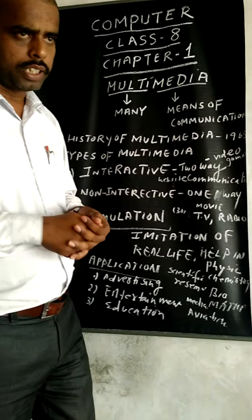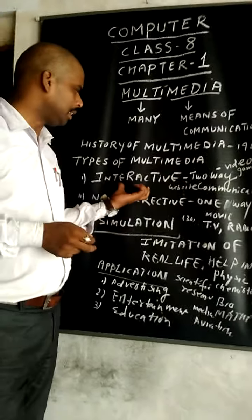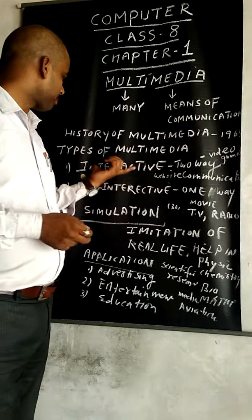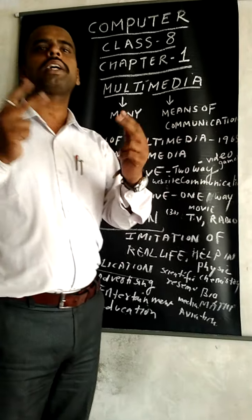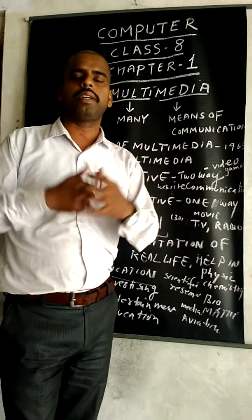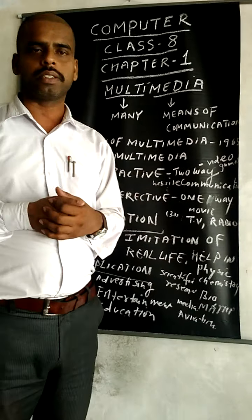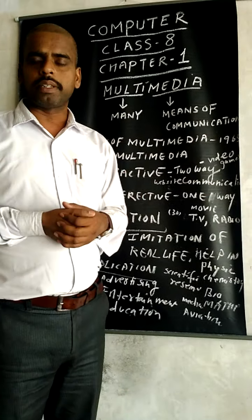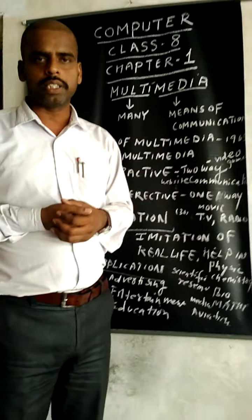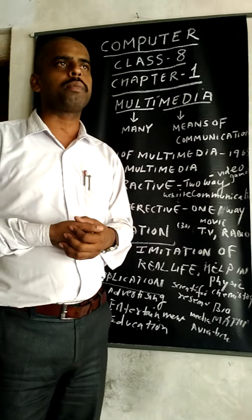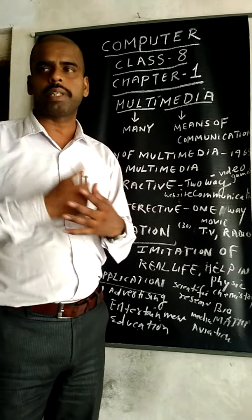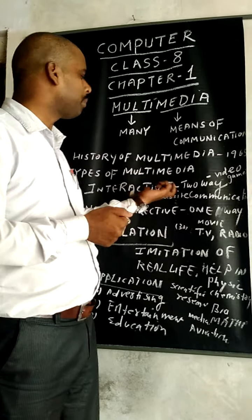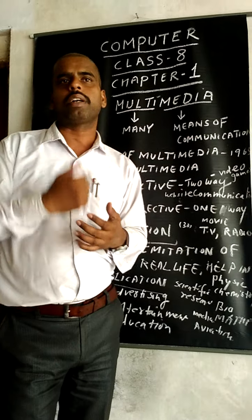There are two kinds of multimedia. One is interactive multimedia and the second one is non-interactive multimedia. Interactive multimedia means it is two-way communication. Suppose you play video games — you play PUBG, you play Ludo — it is possible only with the help of multimedia. It is an example of two-way communication, and it means it is interactive multimedia, where there is a two-way communication.